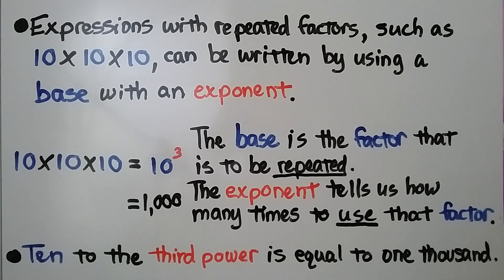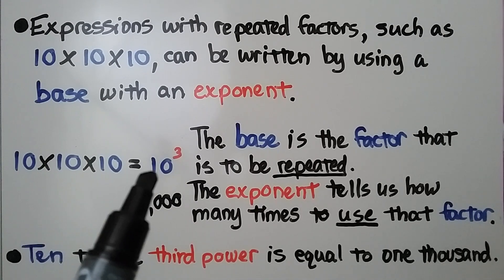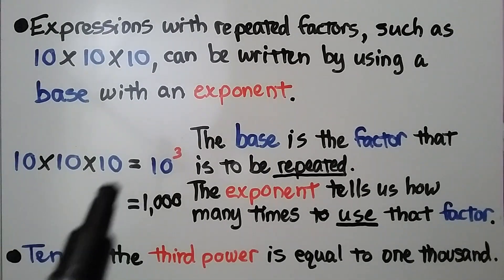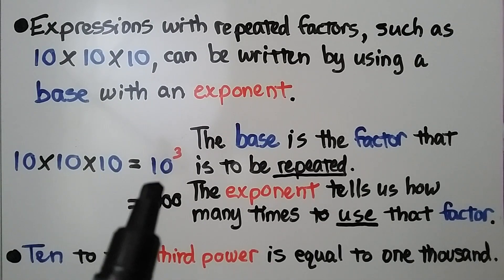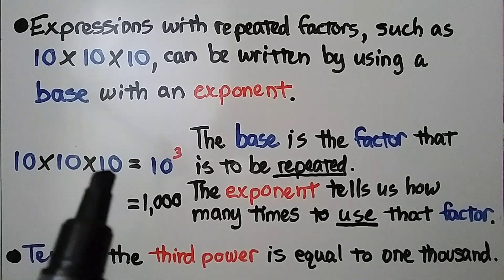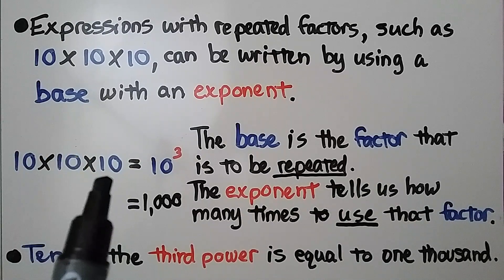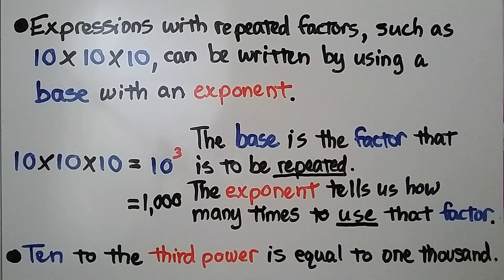Expressions with repeated factors, such as 10 times 10 times 10, can be written using a base — that's the 10 — with an exponent, which is a little number in the upper right-hand side. The base is the factor that is to be repeated, and the exponent tells us how many times to use that factor. So for 10 times 10 times 10, we write 10 as our base and put a little 3 exponent, giving us 10 to the third power, which equals 1,000.